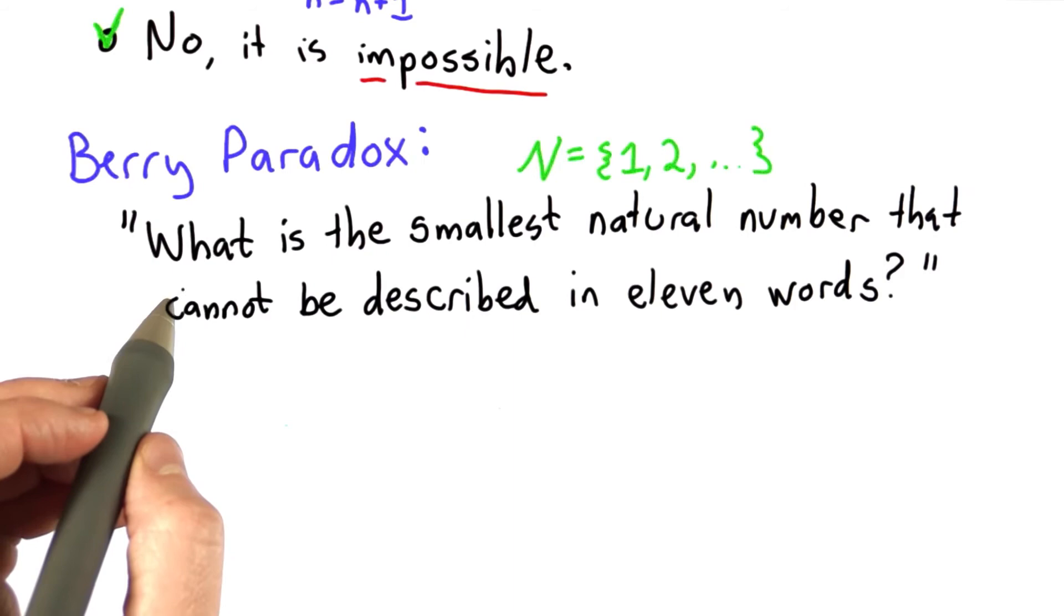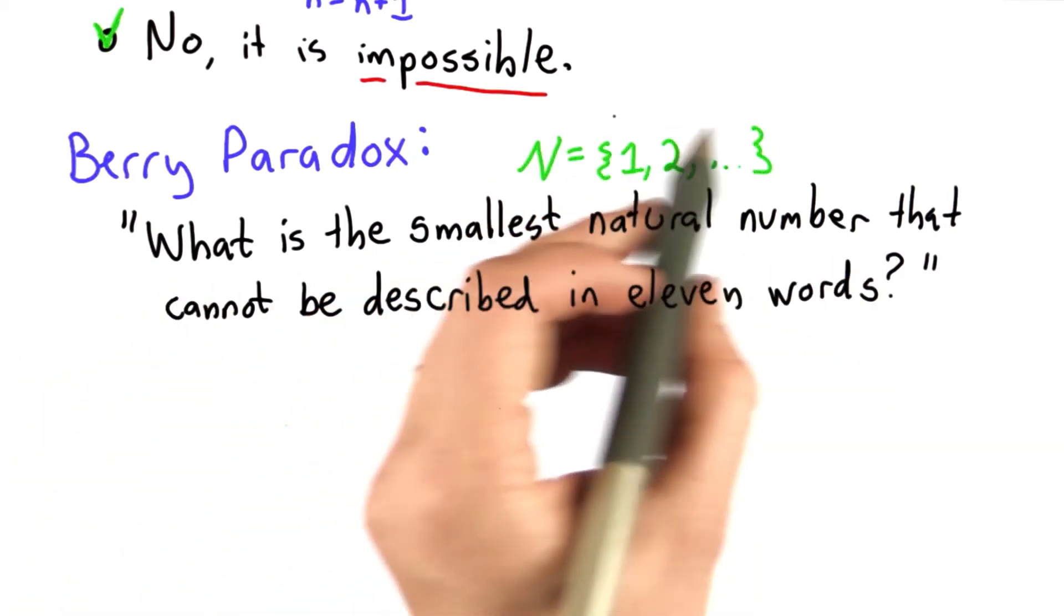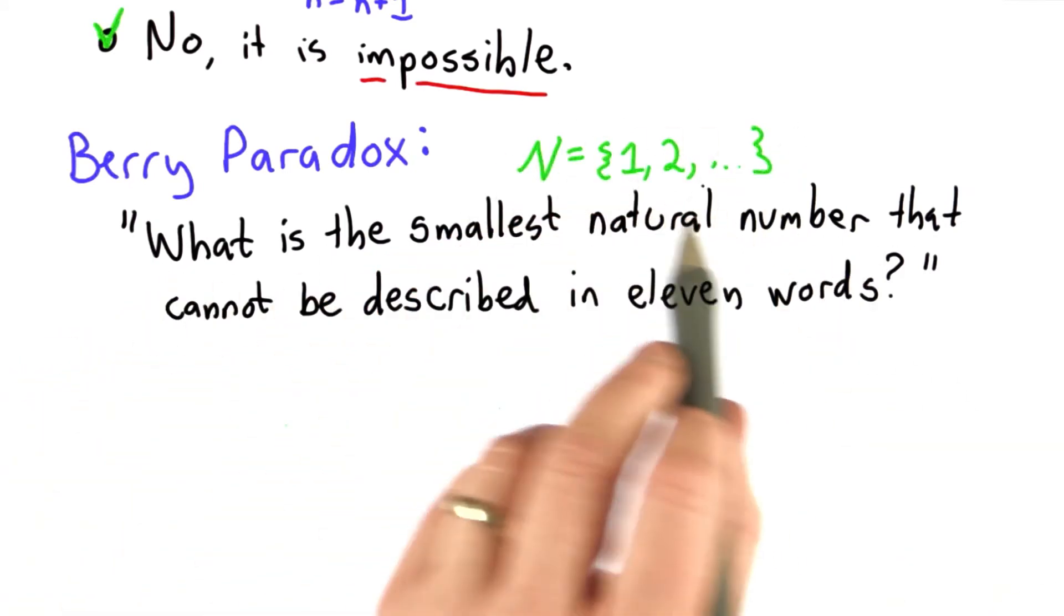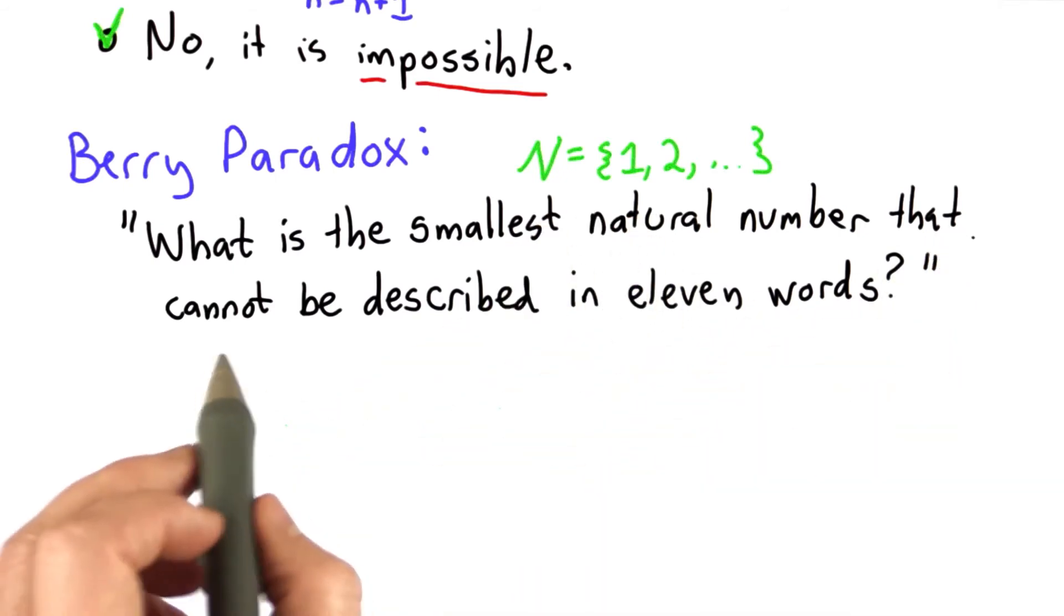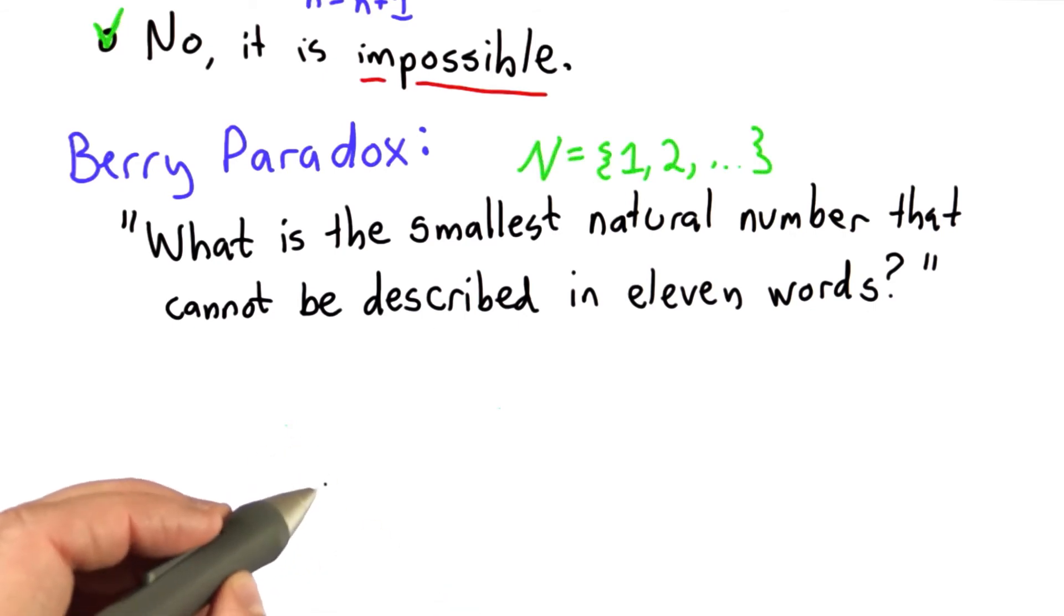What the paradox asks is what is the smallest natural number, and by that I mean the set of numbers 1, 2, 3, sometimes people define it starting from 0. The paradox would work just as well either way. That cannot be described in 11 words.